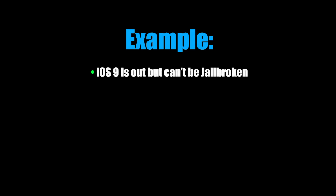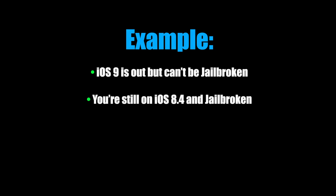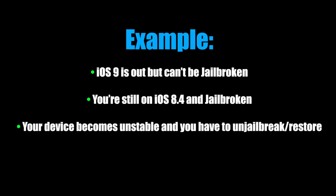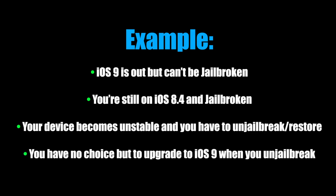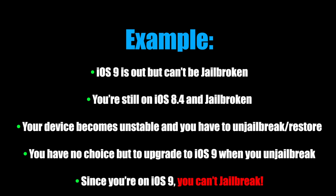Just for an example, let's say that iOS 9 is officially out but it can't be jailbroken. Now let's say that we're on iOS 8.4 and we're jailbroken, then something goes wrong with your device and it's unstable and we have to unjailbreak and restore. Well usually this means you're going to have to upgrade to iOS 9, which means you can no longer jailbreak because you can't downgrade.